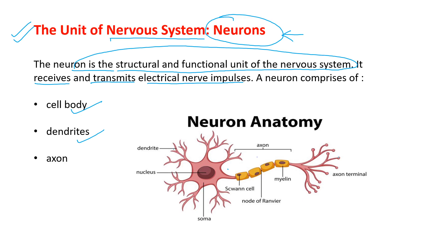The electrical nerve impulses transmit from the cell body to the axon and then to the nerve terminal.